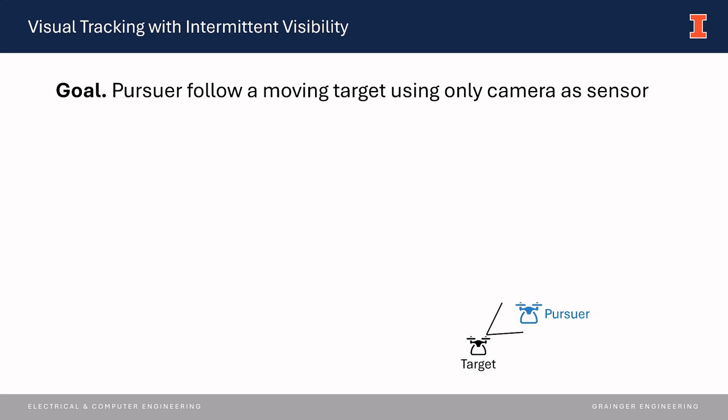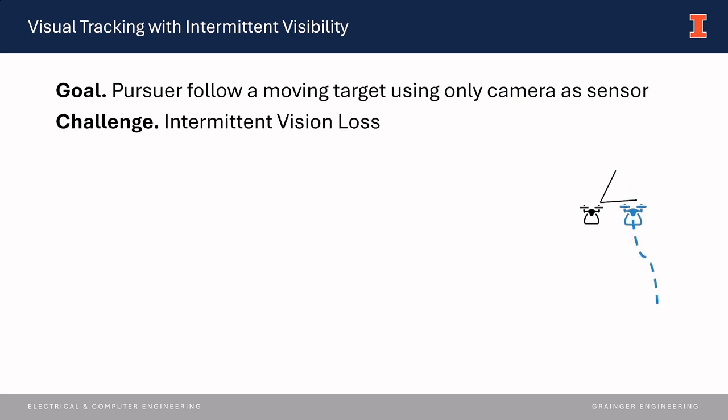The goal is to design a controller that enables the pursuer to follow the target closely and maintain visual contact. The problem is challenging because there is tension between the two goals of maintaining visual contact and gaining proximity, and the pursuer may intermittently lose sight of the target because of detection failures or target maneuvering outside of the pursuer's camera frame.